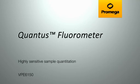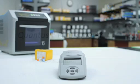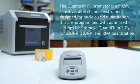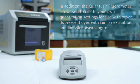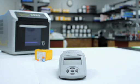The Qantas Fluorometer is a highly sensitive, dual-channel instrument designed for nucleic acid sample quantitation. It is pre-programmed with optimized settings for Promega Quantiflor dyes for double-stranded DNA, single-stranded DNA, and RNA quantitation. In addition, the Qantas Fluorometer allows you to create your own quantitation settings for use with other fluorescent dyes that have similar excitation and emission wavelengths.